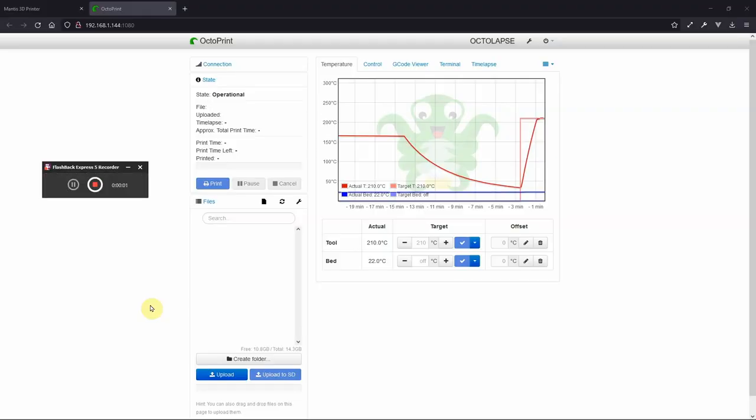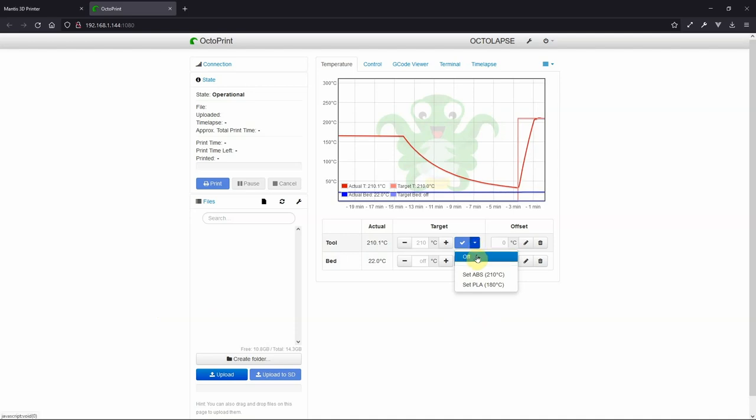The thing that I want to show you is, when you are done—filament's all set, you're ready to start another print or ready to just have your filament loaded—what you want to do is just come back in here, click on that arrow, and click off.